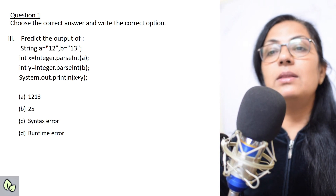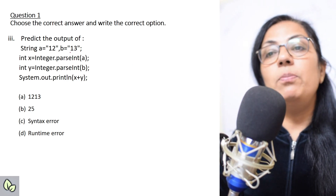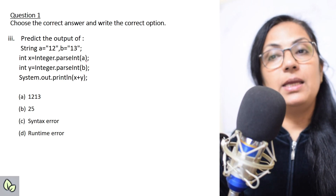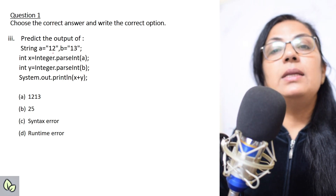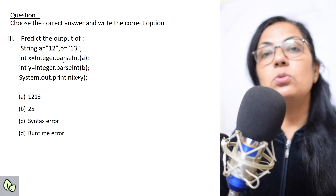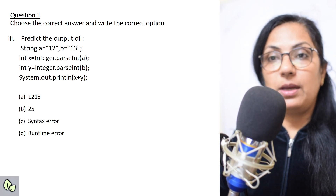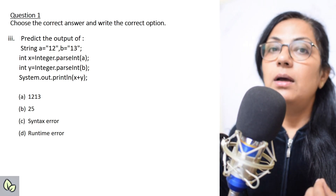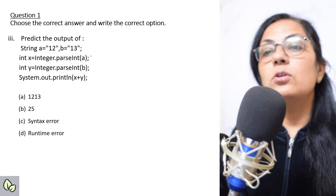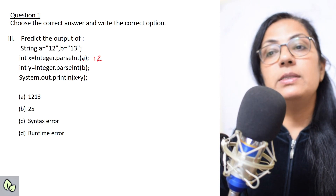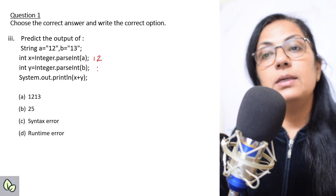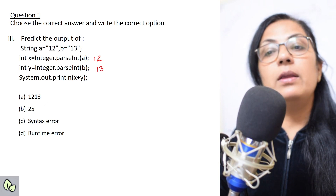The next one: predict the output. String a = "12", b = "13". int x = Integer.parseInt(a). Here 12 and 13 are stored as String type, and Integer.parseInt() is used to extract the integer from the string — it converts a numeric string to integer type. So the value of x will be 12, and y will be 13. x + y gives you 25.